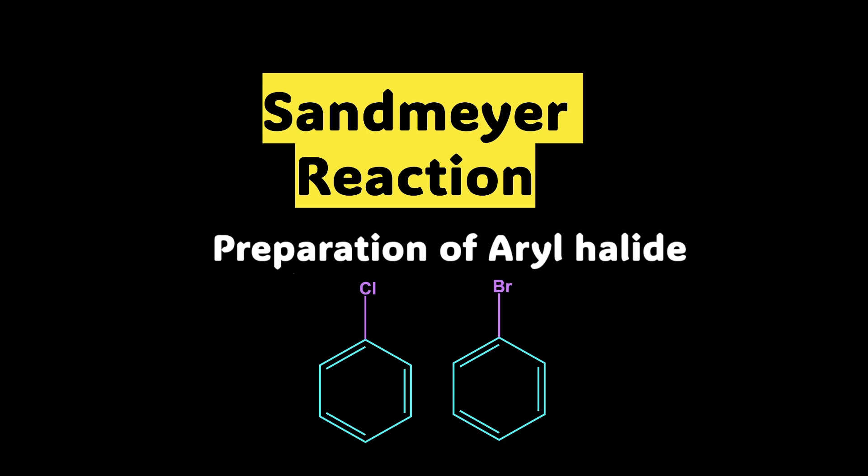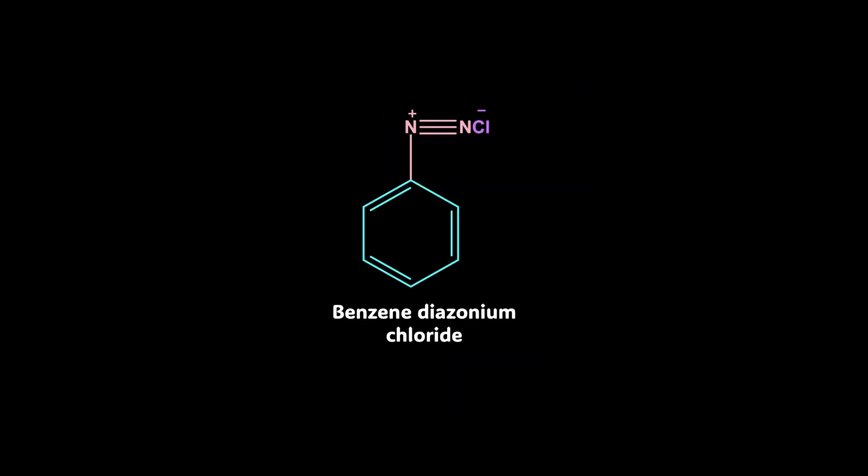But Sandmeyer reaction can't start without knowing this salt, which is benzene diazonium chloride, also known as BDC. For benzene, as you can see, there is a benzene here. Diazonium as this group, N2+, which you see out here, is diazonium.